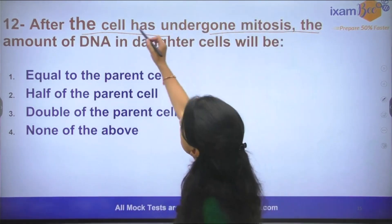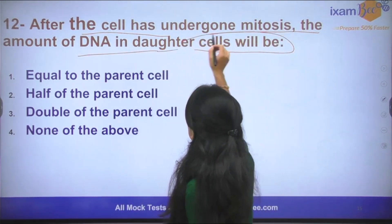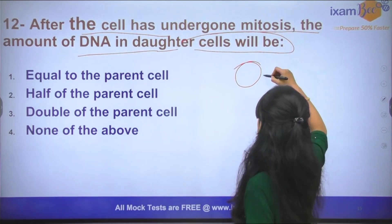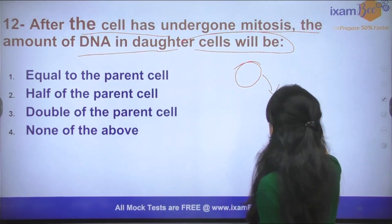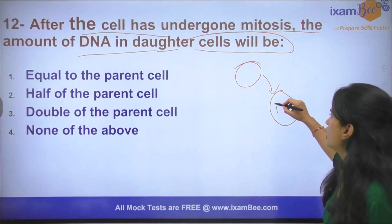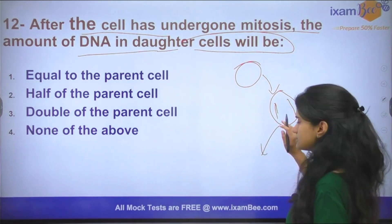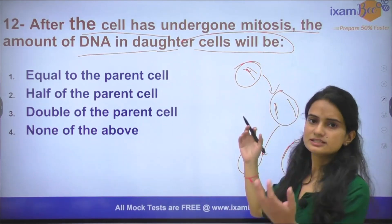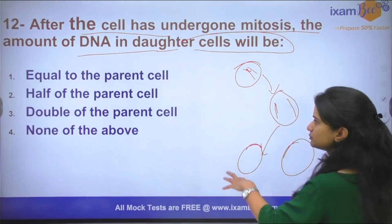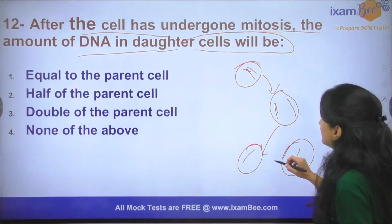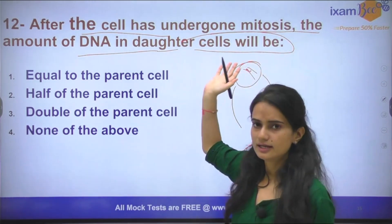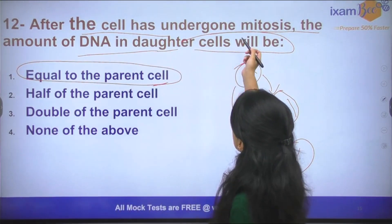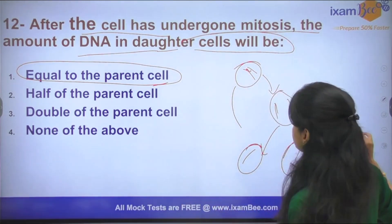Question number 12: After the cell has undergone mitosis, the amount of DNA in daughter cells will be? Initially, when our cell starts mitosis, the S phase occurs where DNA or genetic material is doubled. That is why the answer is: the amount of DNA in the daughter cell will be equal to that of the parent cell.